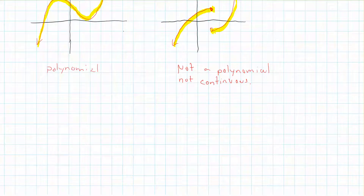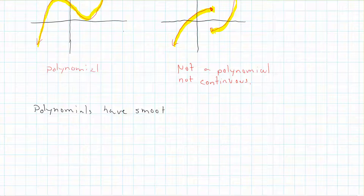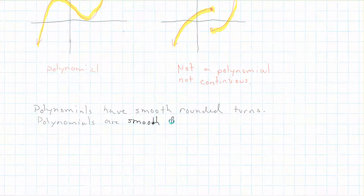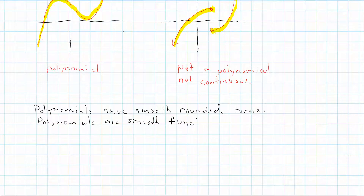Another property: polynomials have smooth rounded turns. Sometimes we refer to this as polynomials being smooth functions. There is a much more technical definition of what it means to be a smooth function, but at this point we don't have enough tools — mainly we need some calculus — to get that definition. For our purposes, we can just know that looking at it, the polynomial has smooth rounded corners.